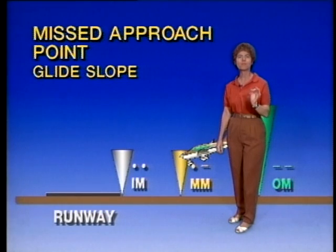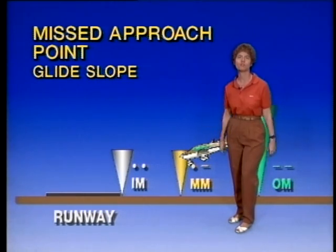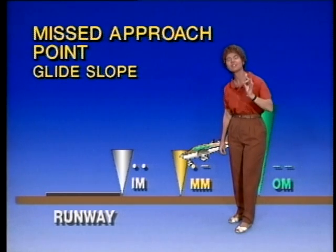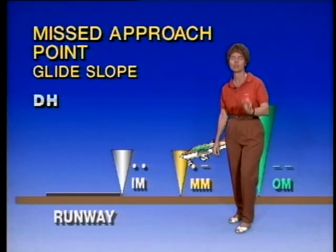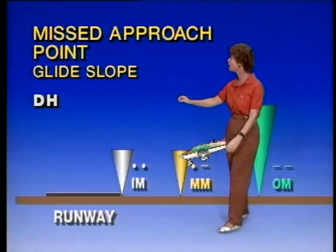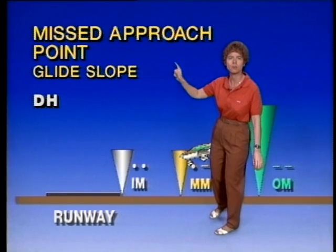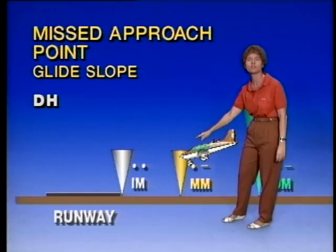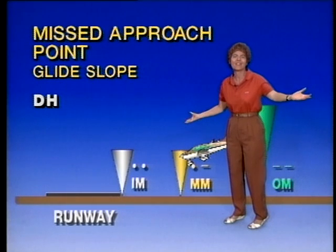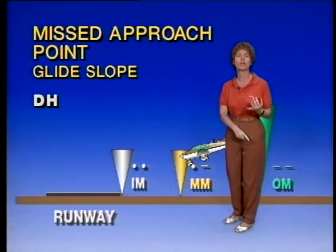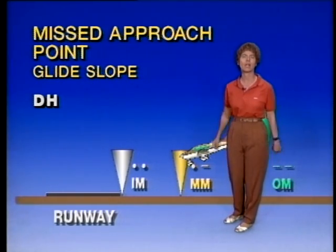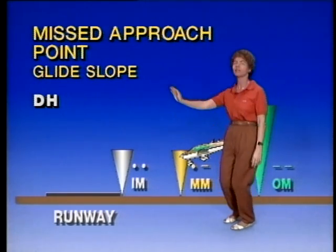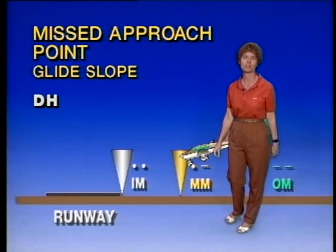The missed approach point on any approach where you're flying a glide slope, such as an ILS approach, is the Decision Height — the DH on that approach. That is your decision altitude, because when you get to that altitude on the glide slope, you make a decision. Either you're legal to land or you're not legal to land. And if you're not legal to land, you immediately pull up and start the missed approach.